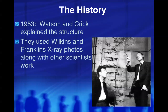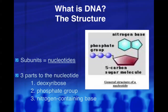A little history lesson: back in 1953, we actually didn't know what DNA was or what was found in our cells — we just knew we were made up of cells. Watson and Crick are two scientists who explained the structure. They used x-ray photos taken by Franklin and Wilkins, along with other scientists, to put together the idea of the DNA structure. What they found was that there are subunits of DNA, known as nucleotides.